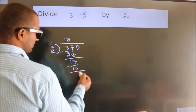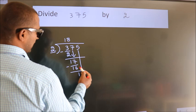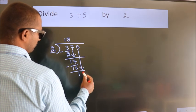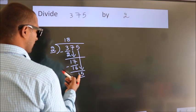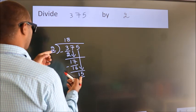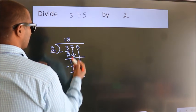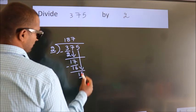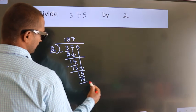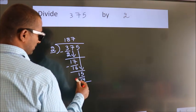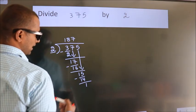After this, bring down the beside number. So 5 down. So 15. A number close to 15 in 2 table is 2 7s, 14. Now we subtract. We get 1.